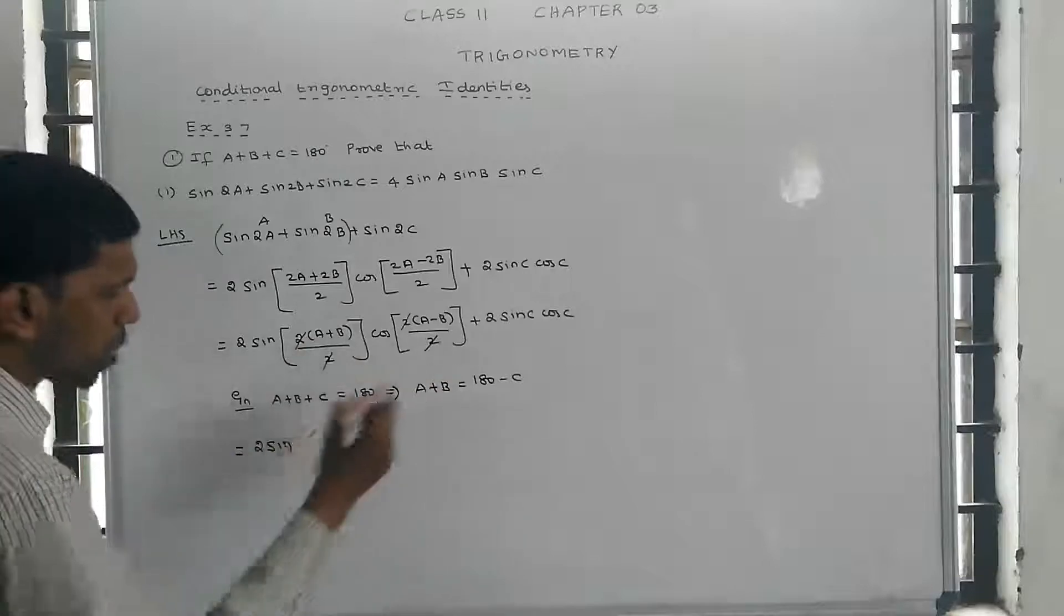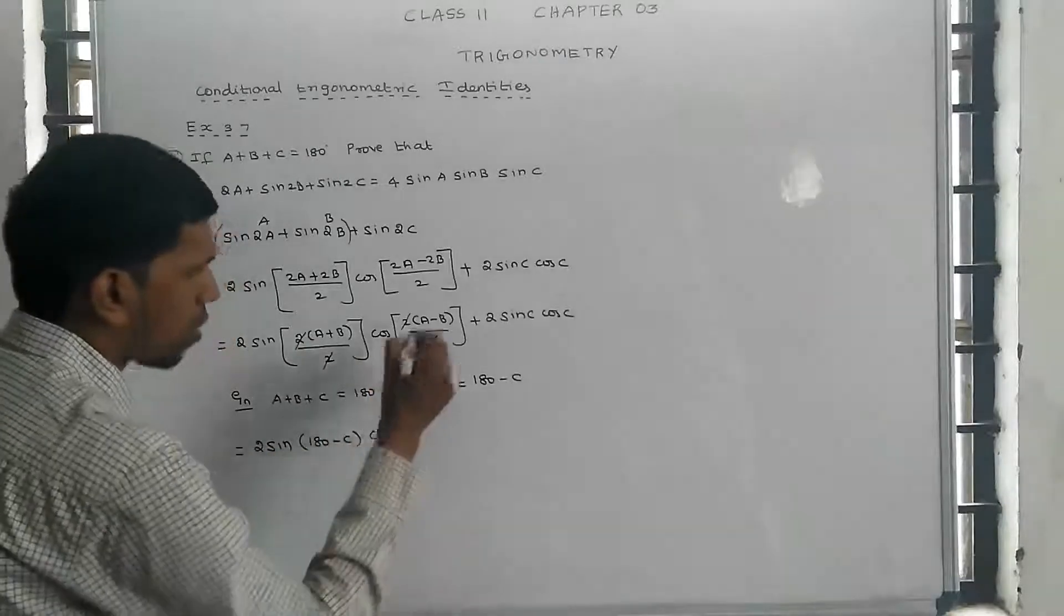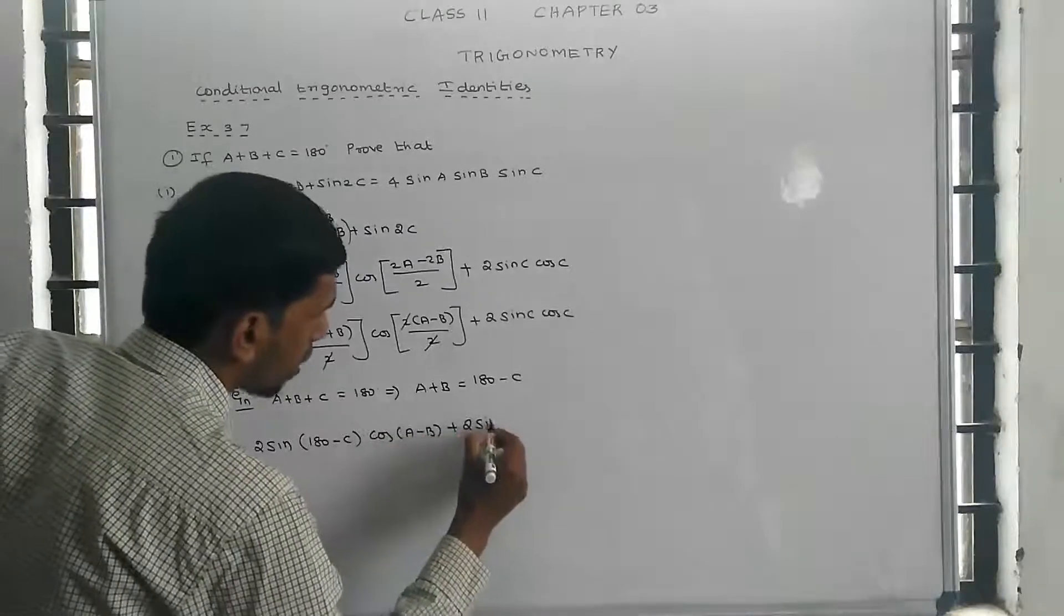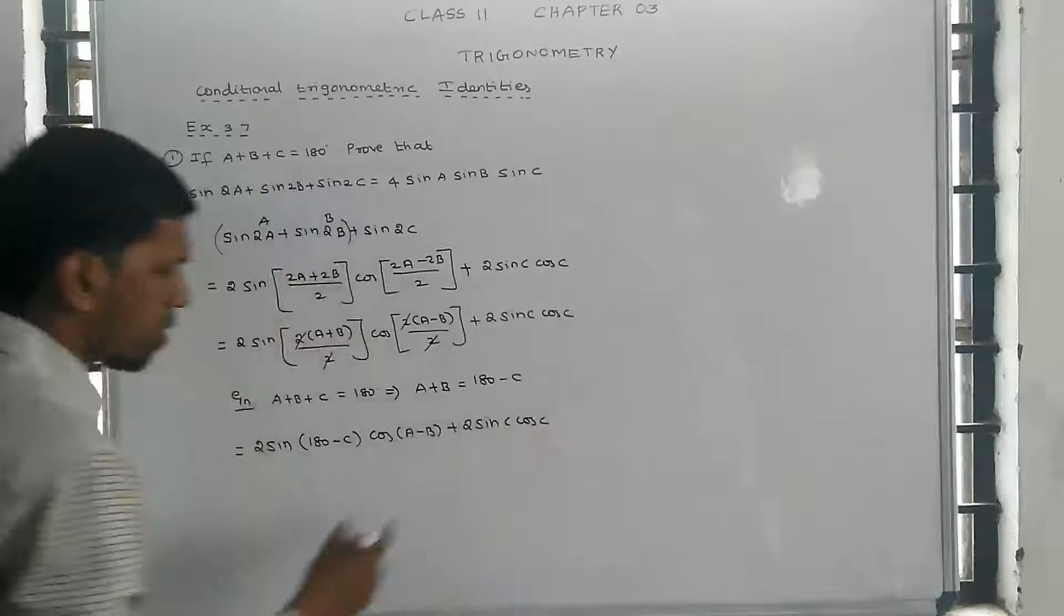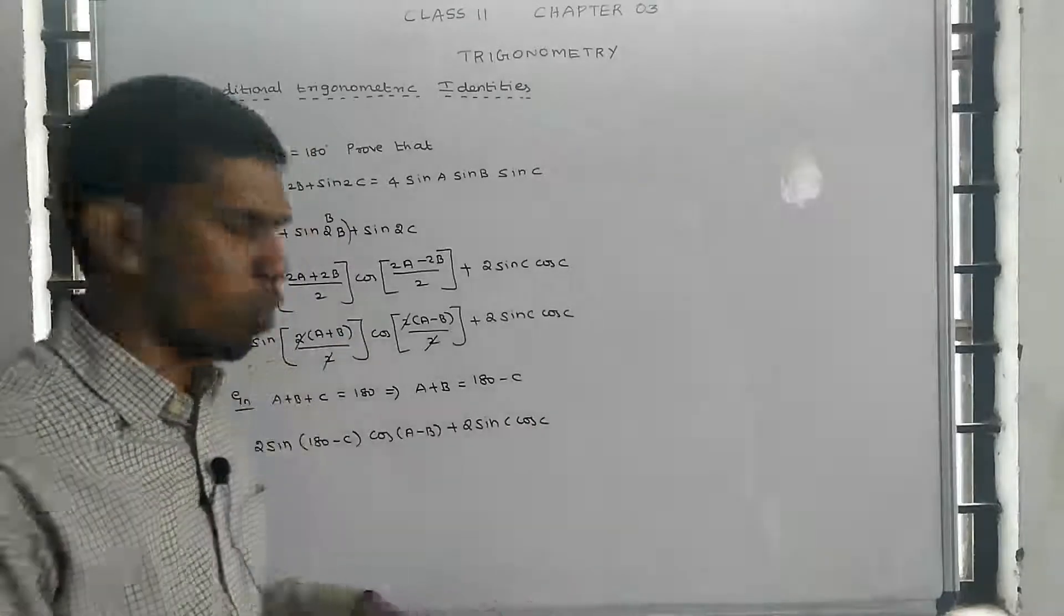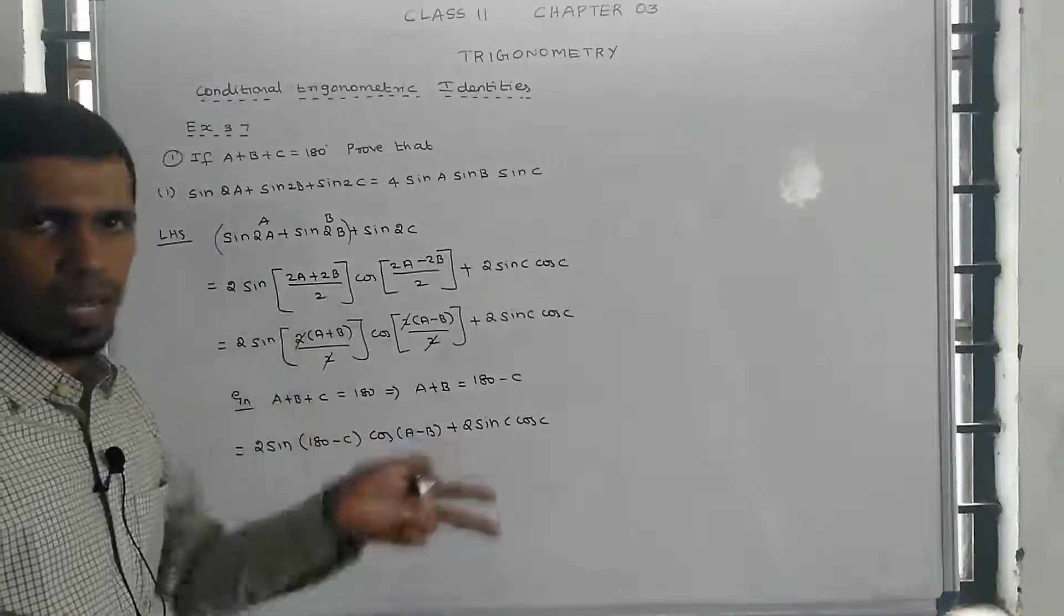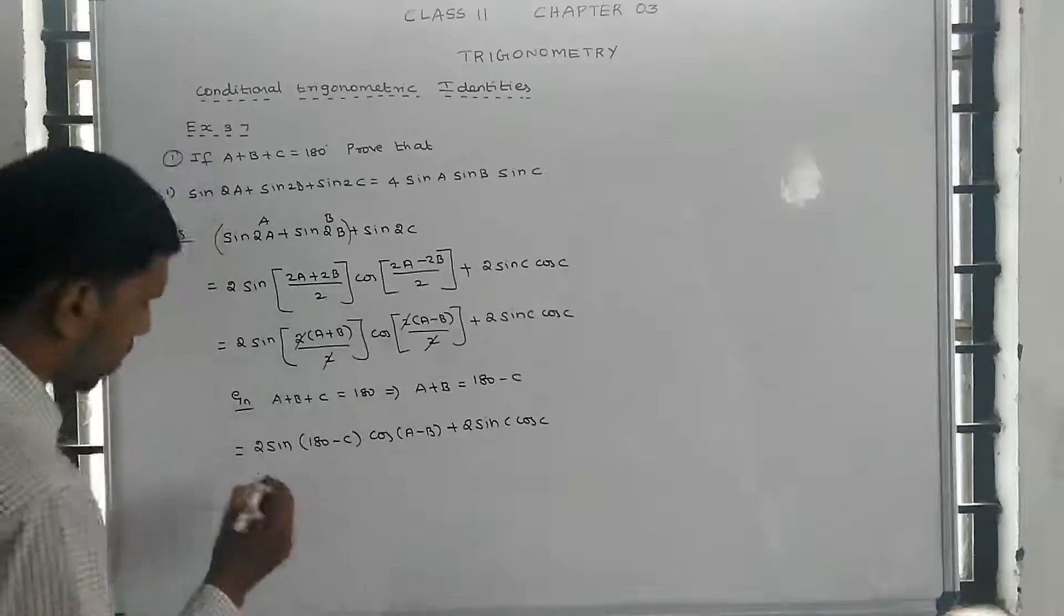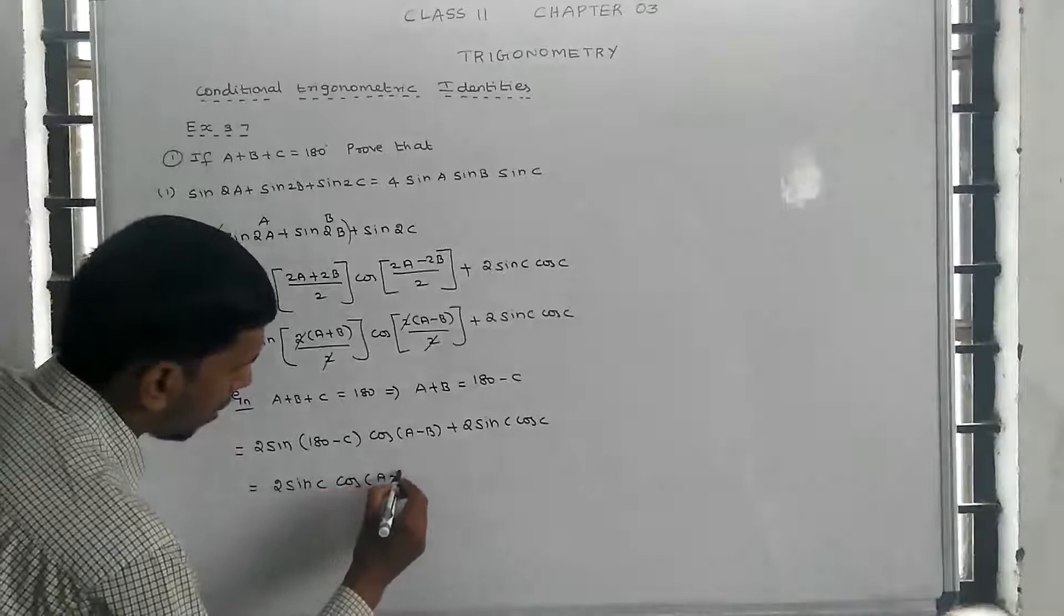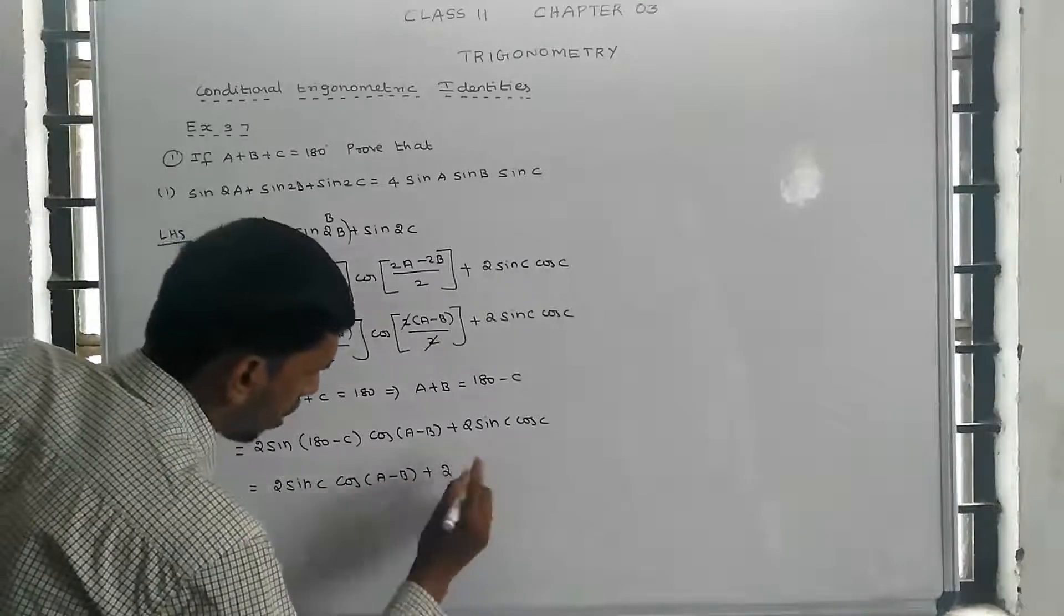Substituting a + b = 180 - c, we get 2 sin c times cos((a-b)/2) plus sin c cos c. Factoring out sin c, we have sin c times [2cos((a-b)/2) + cos c].